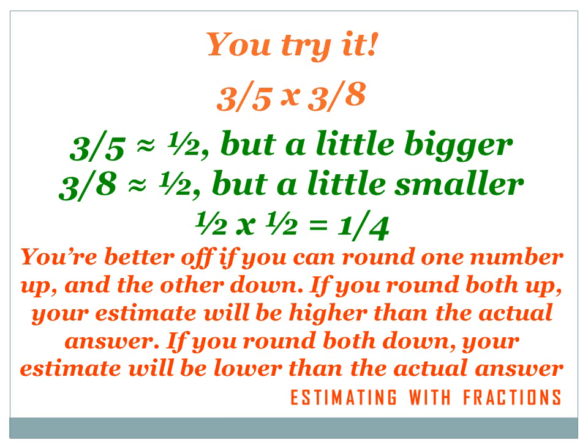3 fifths times 3 eighths. Well, 3 fifths is a little bit larger than a half, so let's round 3 fifths down to 1 half. 3 eighths is a little bit smaller than a half, but let's round it up to a half. So we change the problem from 3 fifths times 3 eighths to 1 half times 1 half. And 1 half times 1 half is 1 times 1 over 2 times 2, or 1 over 4. So 3 fifths times 3 eighths equals approximately 1 quarter. Again, you're much better off rounding one number up and the other down — if you round both up, your estimate will be higher than the actual answer; if you round both down, your answer will be lower.